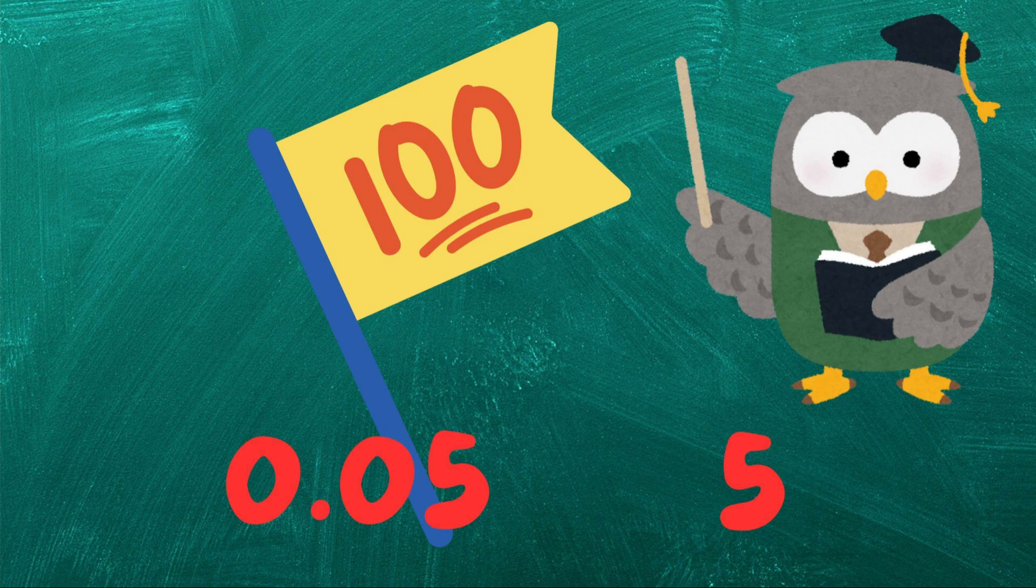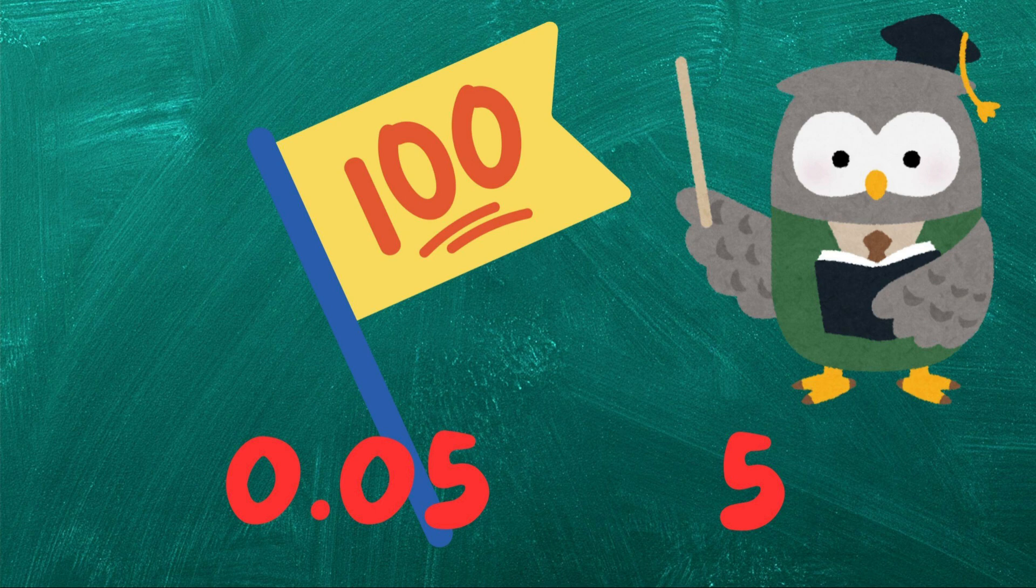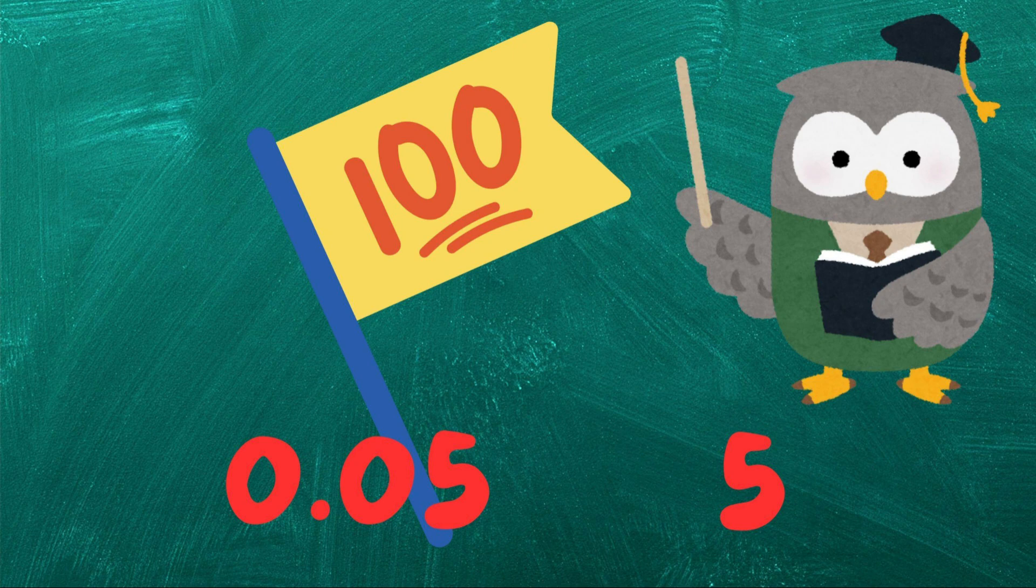Similarly, in decimals, zero shows us fractions of a whole. For example, 0.05 means 5 hundredths, or 5%. Without zero, we'd just have five, which is much larger than 0.05.